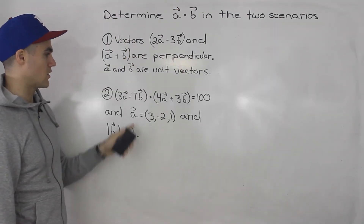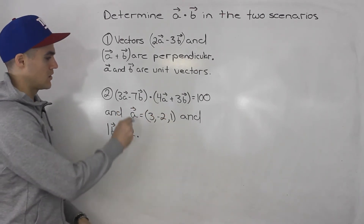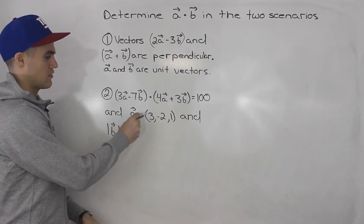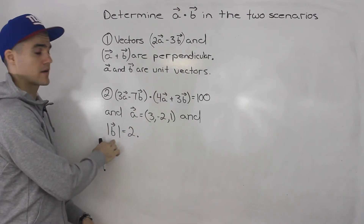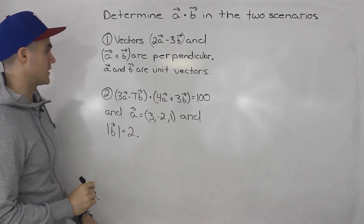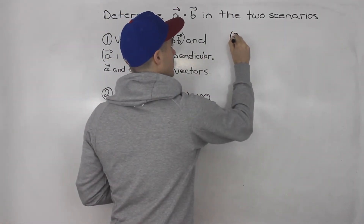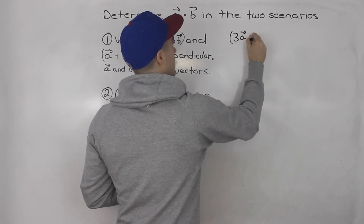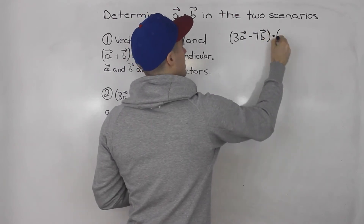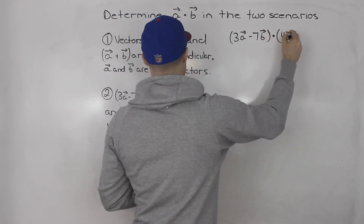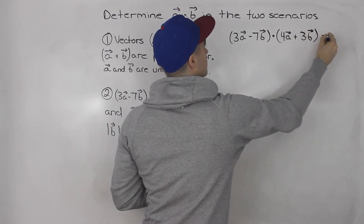Moving on to the second scenario: the dot product between the two vectors in brackets is equal to 100. We know that vector a is (3, -2, 1) in component form, and the magnitude of vector b is 2. So we write out (3a minus 7b) dot (4a plus 3b) equals 100.